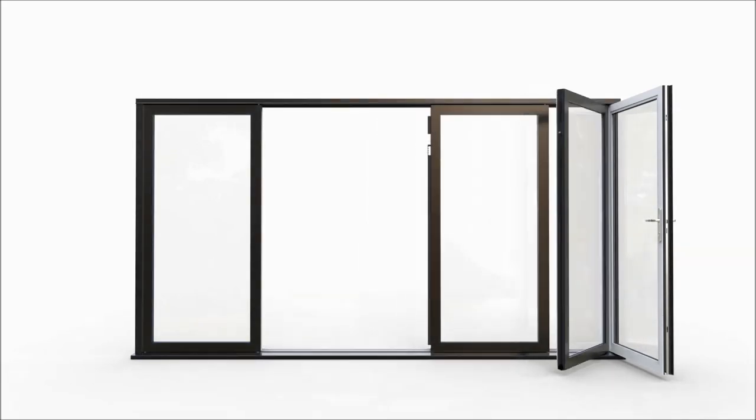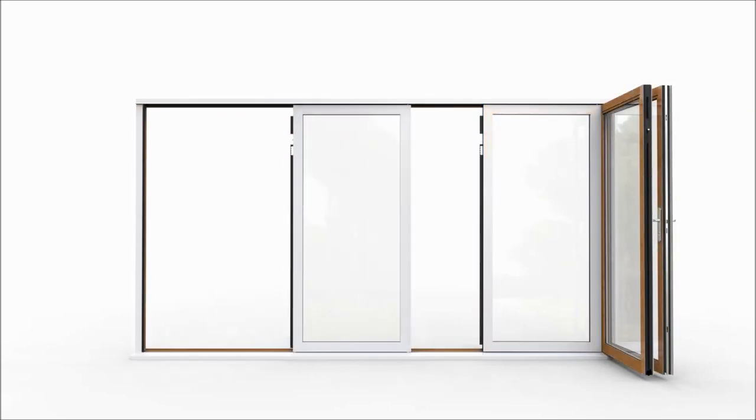Because the strong aluminum sections are bonded to the central core, they're available in a huge variety of different colors inside and out, foil finishes to match existing windows and doors, even beautiful solid timber internal finishes.